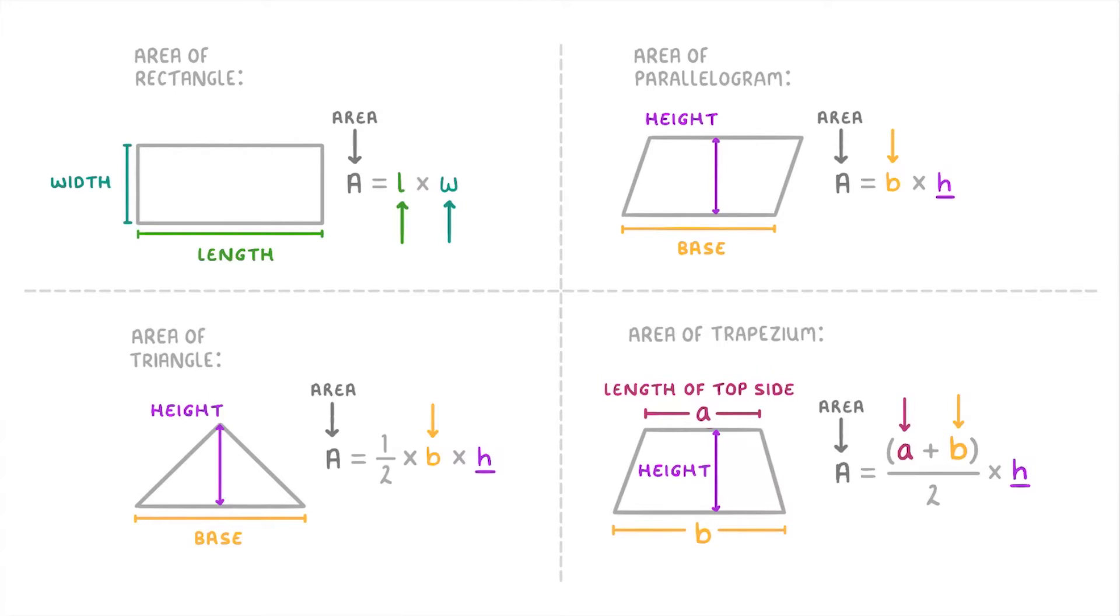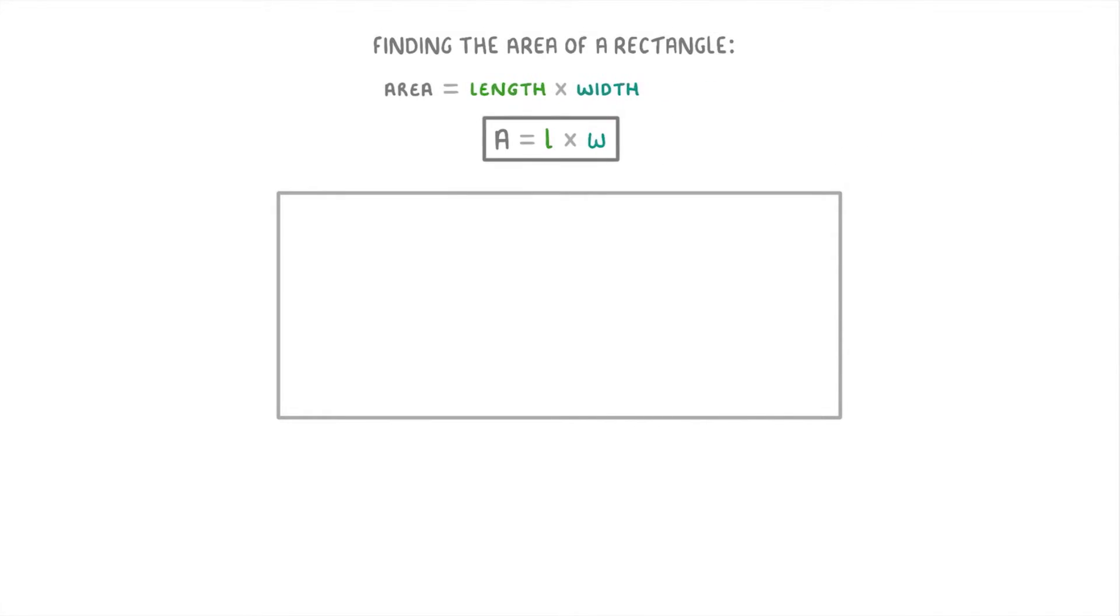Okay so let's now go through each of these one by one and we'll start off with the rectangle. The formula for a rectangle is area equals length times width. So if this rectangle was seven centimeters long and three centimeters wide, we just multiply the length of seven centimeters by the width of three centimeters. So that would be 21 and the unit would become square centimeters.